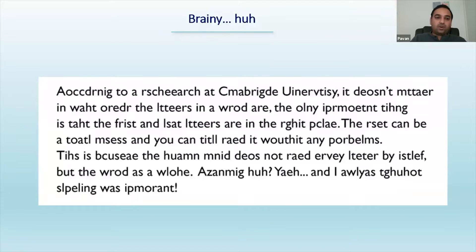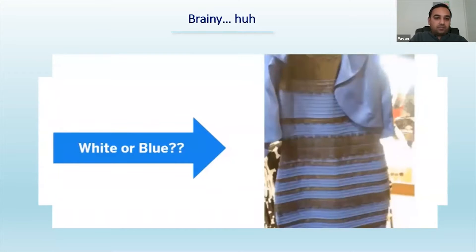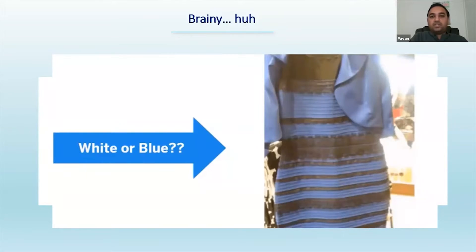That's the science of the brain — how it interprets the data and visualization. Another example: you might have seen this image many times. Some of you might see it as blue, some as white — it basically depends on what kind of color composition your brain holds, and whether you are a left-brain or right-brain person, which part of your brain overtakes the other determines how you color-code things. So the brain plays a significant role in the whole data visualization, which is why everyone goes beyond just understanding it superficially.